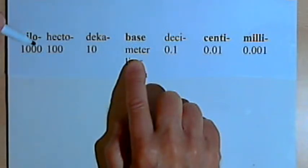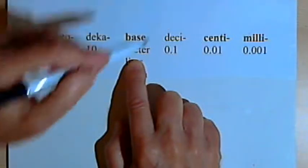So the ones you're going to see are going to be kilo, as in kilometer, centi, and milli.